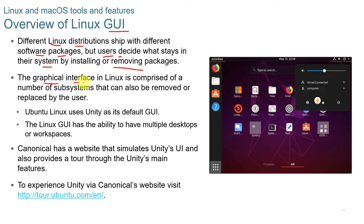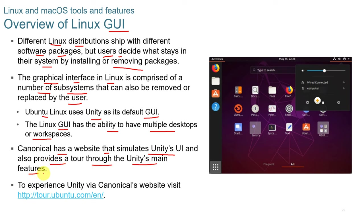When looking at the Linux graphical user interface, it depends on which GUI you install, as Linux distributions ship with different software packages that the user can customize. The graphical interface in Linux is comprised of subsystems that can be removed or replaced by the user. Ubuntu uses Unity as its default GUI, and Linux also has the ability to have multiple desktops or workspaces. Canonical has a website that simulates Unity's UI and provides a tour through its main features.